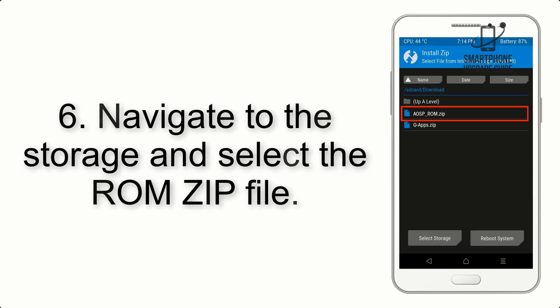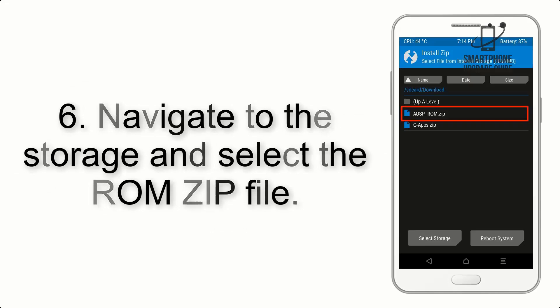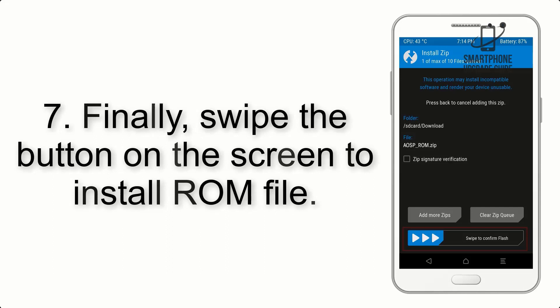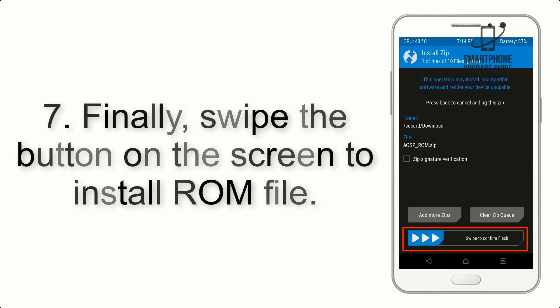Step 6: Navigate to the Storage and select the ROM ZIP file. Step 7: Finally, swipe the button on the screen to install the ROM file.